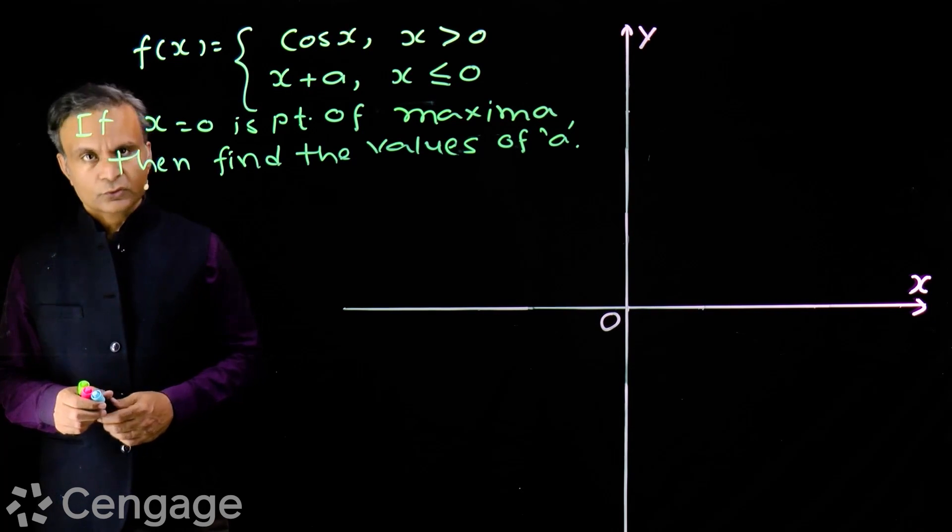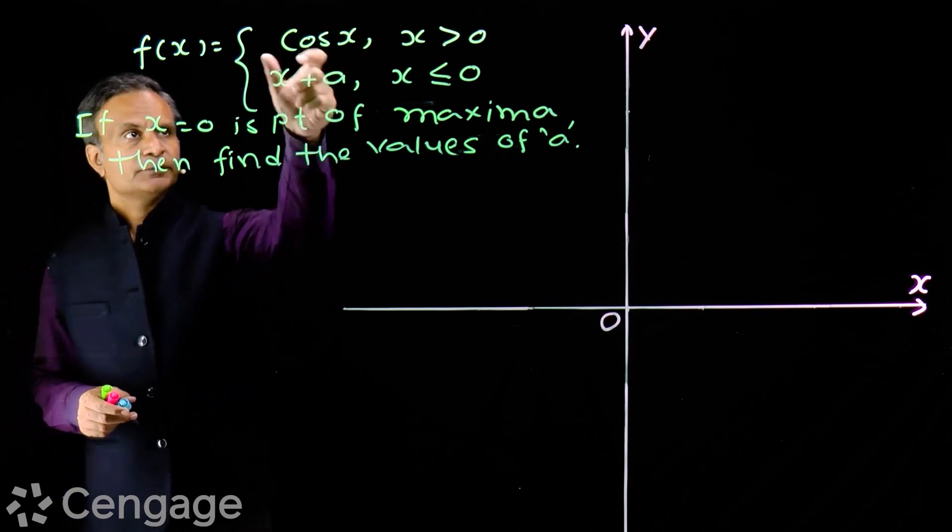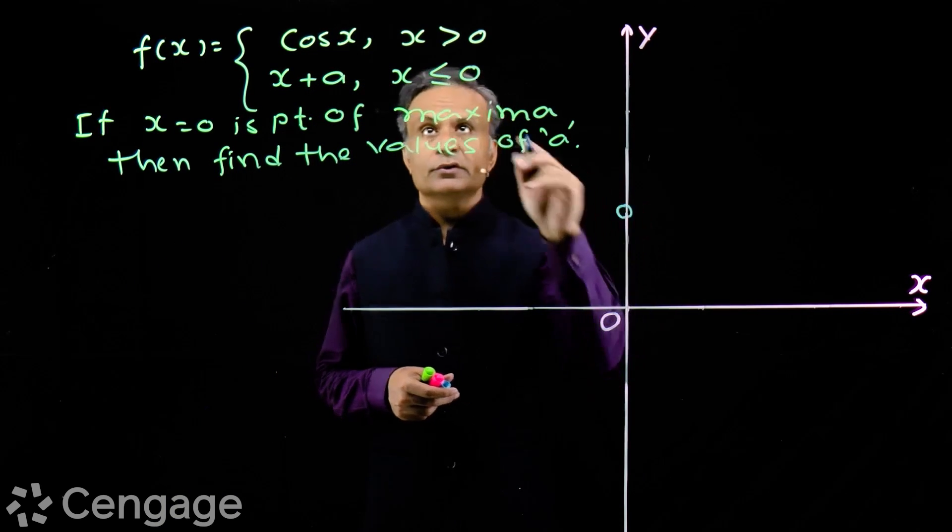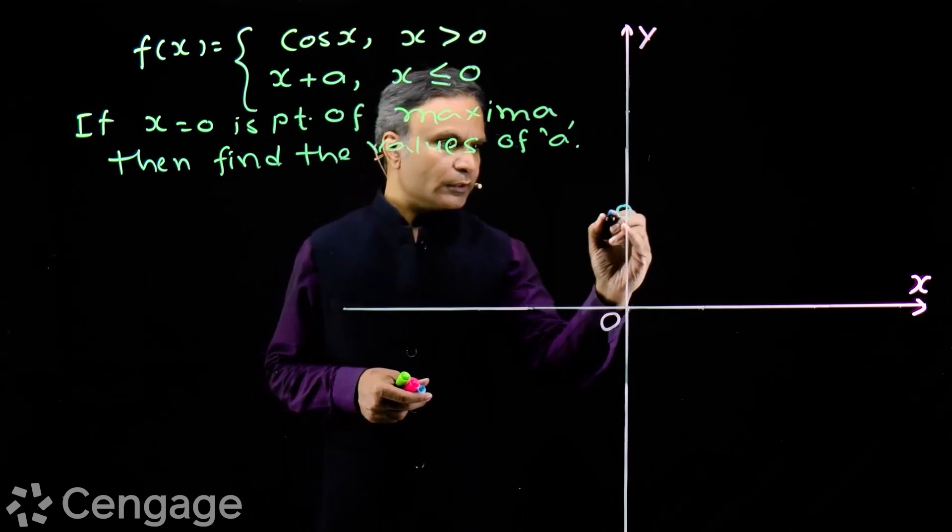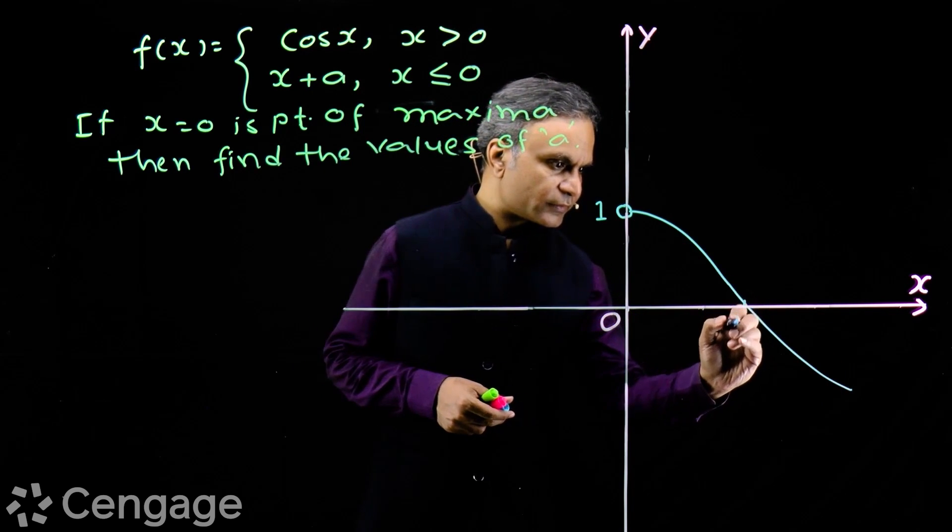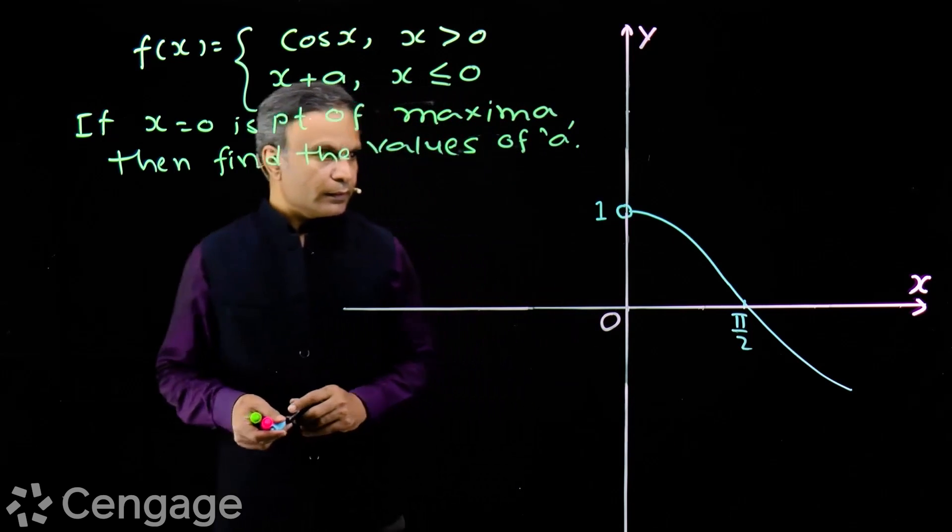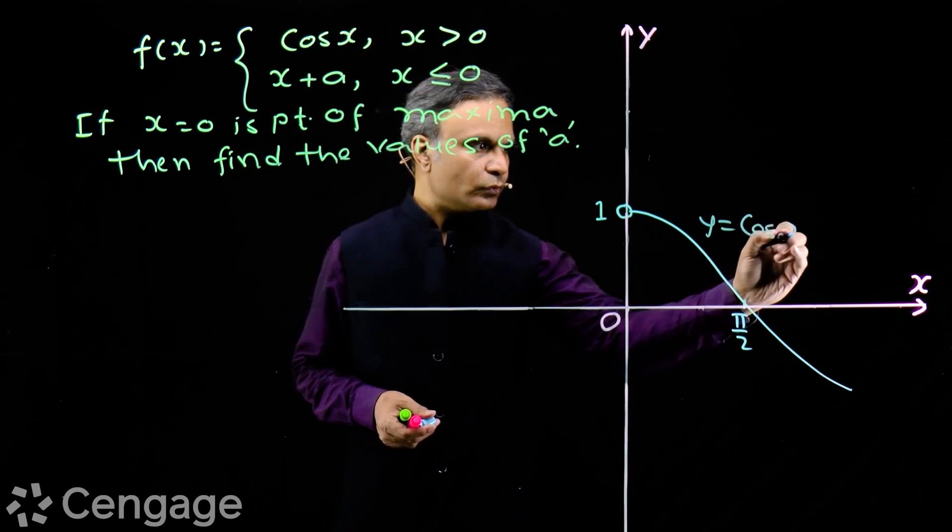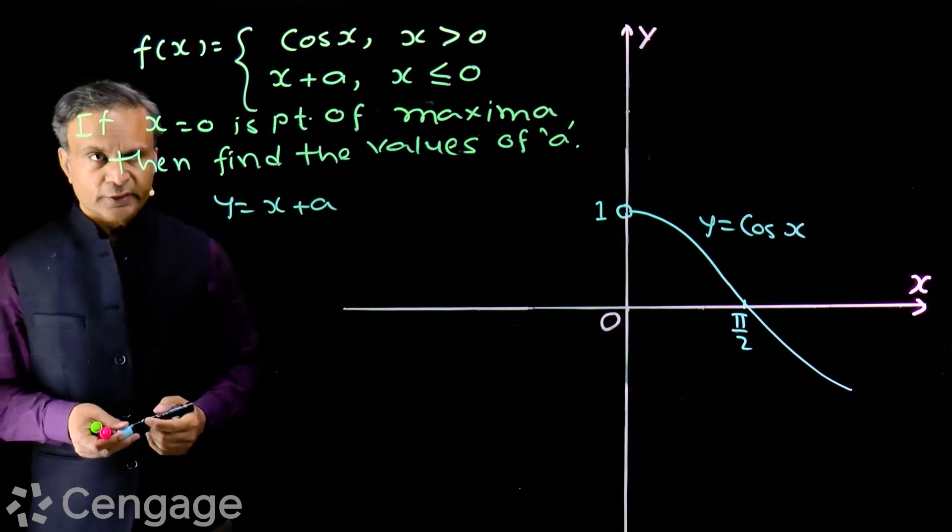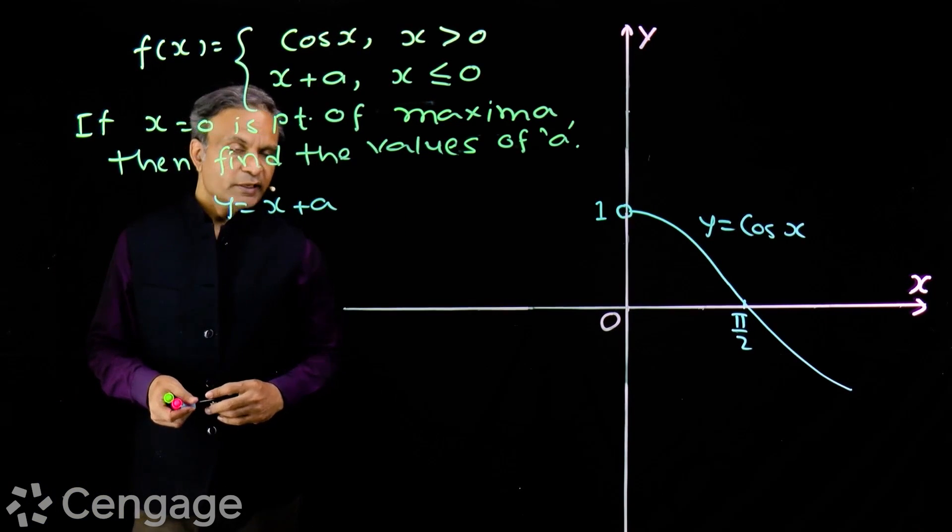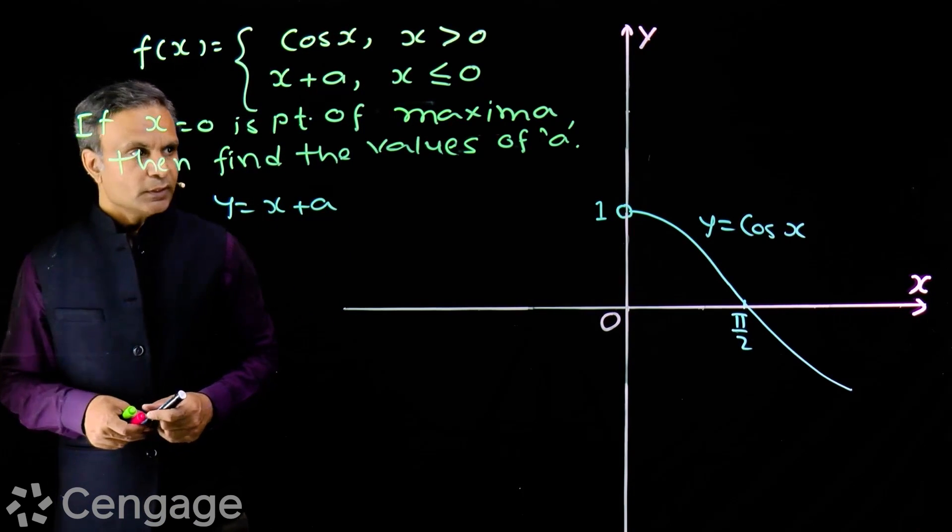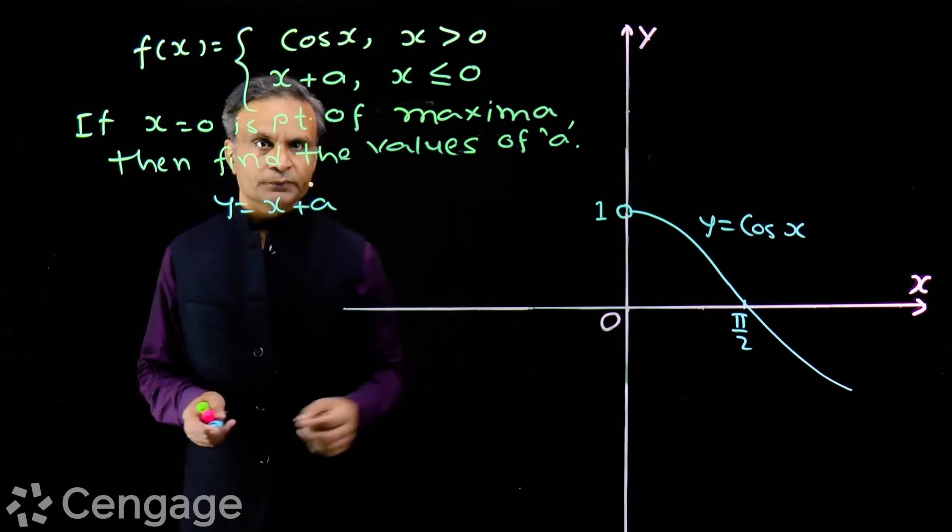We have first cos x for x more than 0. We have here graph of cos x. We have here cavity because 0 is not in the domain of this branch. This is one, and this is graph of cos x. It intersects x axis at pi by 2. This is y equals cos x. Then, what will be graph of this straight line? y equals x plus a. Linear function. Graph will be straight line. Now, this line depends on values of a. We want a point of maxima at x equals 0.